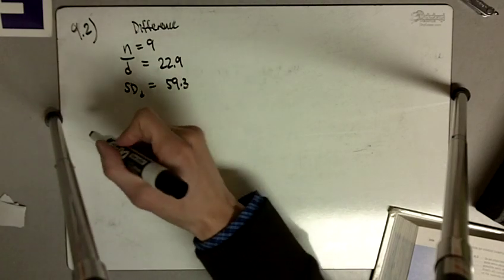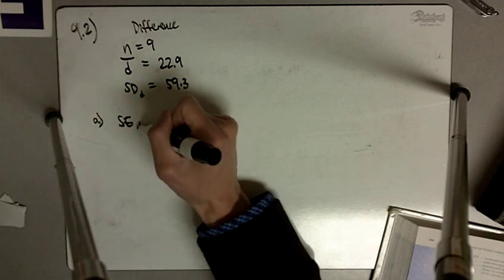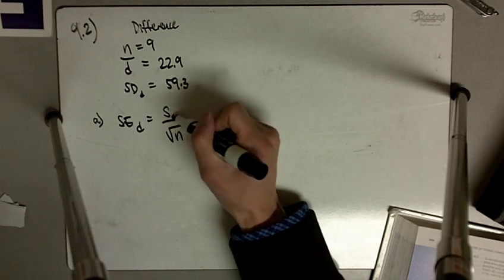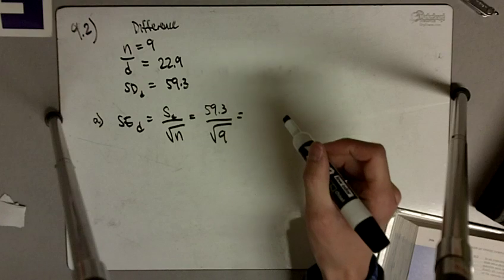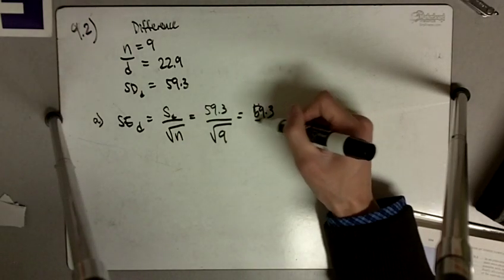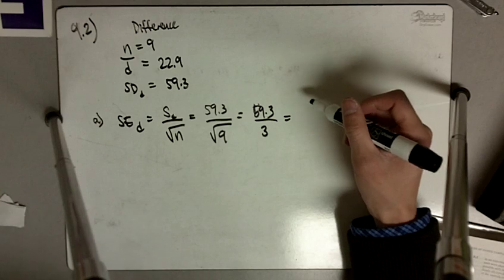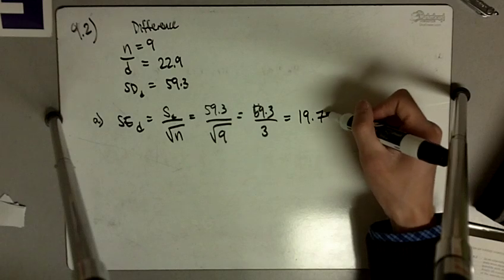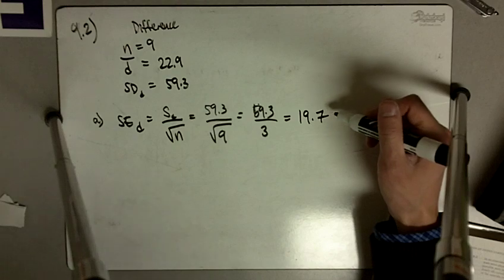It says calculate the standard error of the mean difference. So the standard error of the difference is going to be the standard deviation of the difference divided by the square root of n. So in this case we've got 59.3 divided by the square root of 9. So 59.3 divided by, not 7, divided by 3 is equal to, this is almost 60 divided by 3, so 19.7.